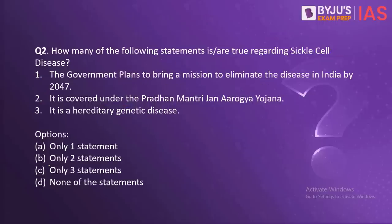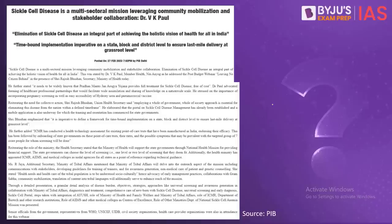The next question: how many of the following statements are true regarding sickle cell disease? The government plans to bring a mission to eliminate the disease in India by 2047. It is covered under the Pradhan Mantri Jan Arogya Yojana. It is a hereditary genetic disease. Now in the budget of 2023-24, the finance minister declared that we will be bringing a mission to eliminate sickle cell disease by the year 2047.